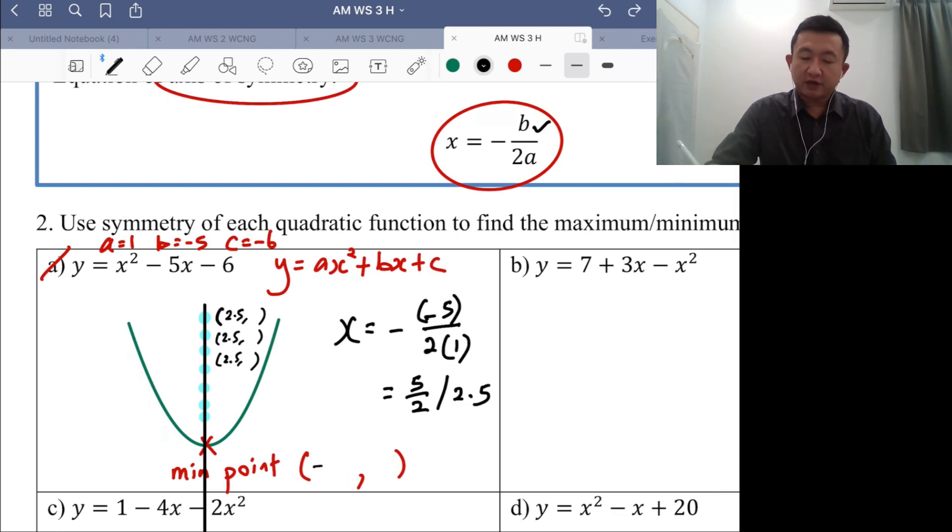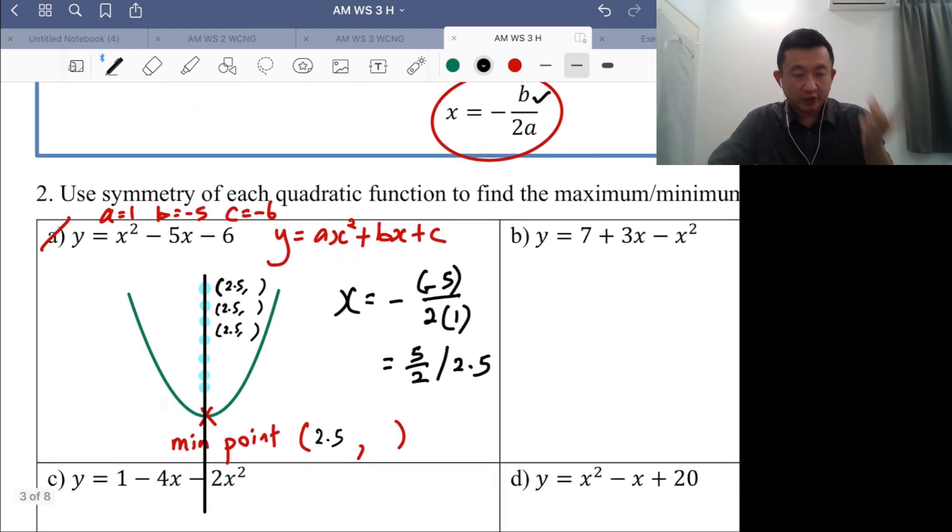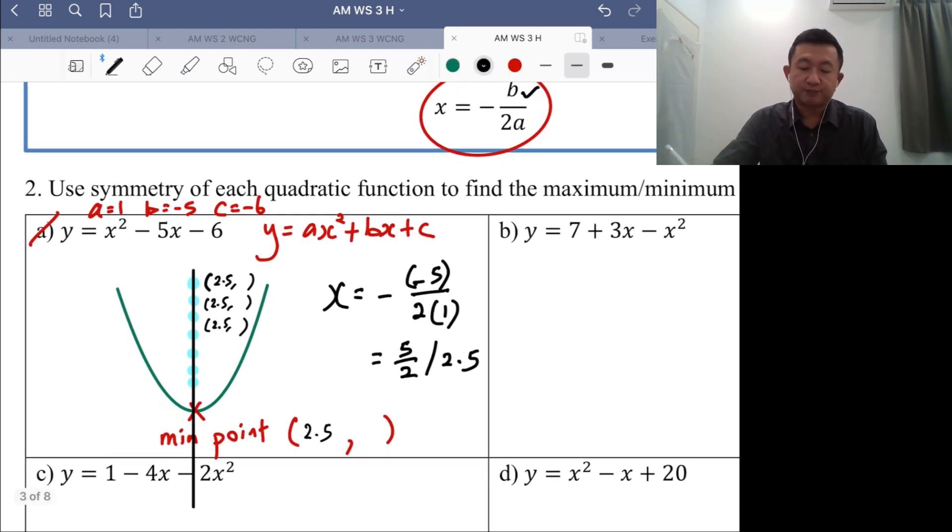Once you have the x value of the turning point, you can find the y value. Why? Because you can just substitute into that equation. We do know the quadratic function of this graph, which is y equals x squared minus 5x minus 6. If I put in the value of x, you will figure out the value of y, the corresponding value. So the last step, you're just putting in.